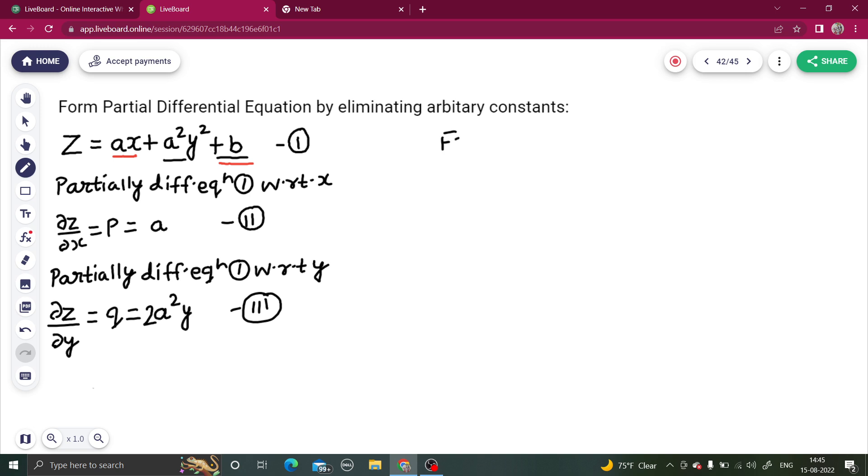From equation number 3, we have q equals to 2a square y. And from equation number 2, we know the value of p is equal to a. So you can write this as q equals to 2a square y. Instead of a square I can write p square and then the y. So q equals to 2p square y.